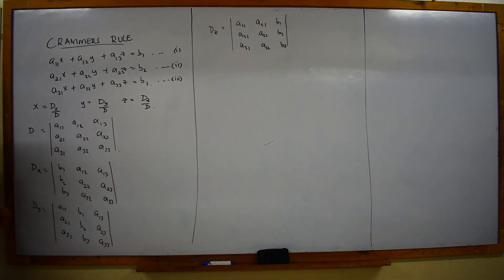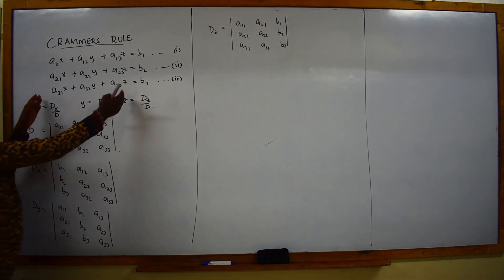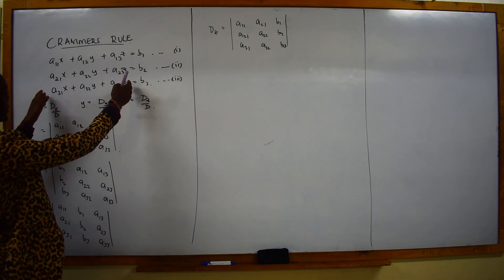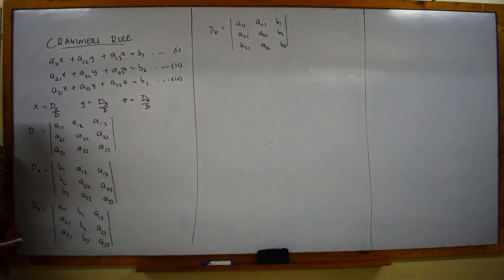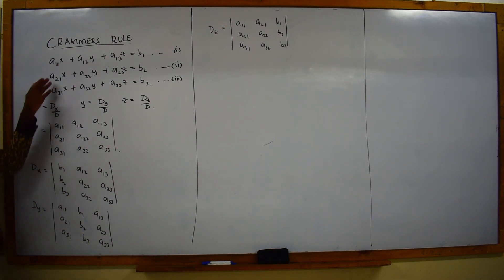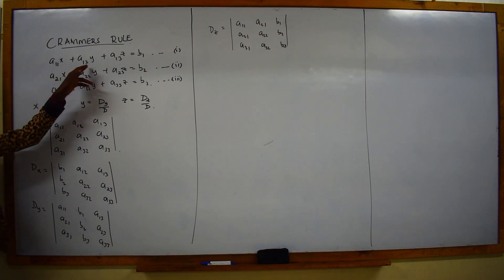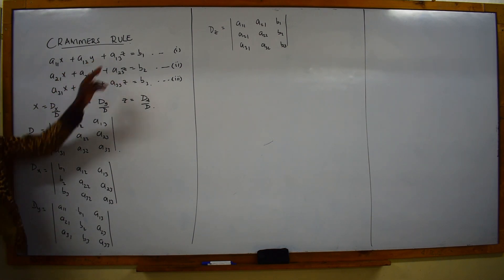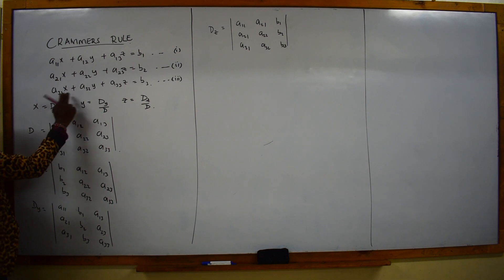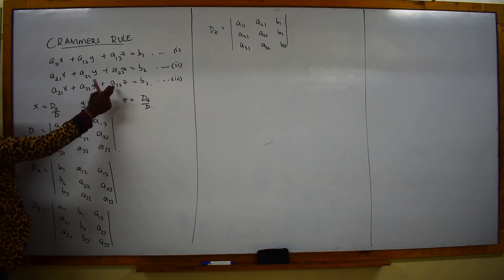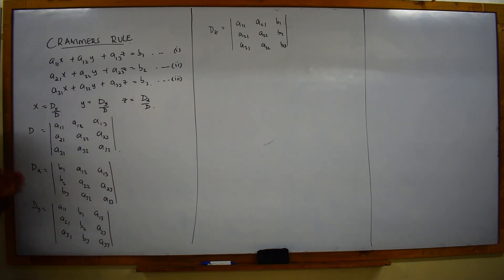How do you get the determinant? The determinant of this 3 by 3 matrix on the left hand side is obtained by extracting the constants. So in our case we have a11, a21, a12, and a13 — this term, this term, and this term. So that gives us our D.